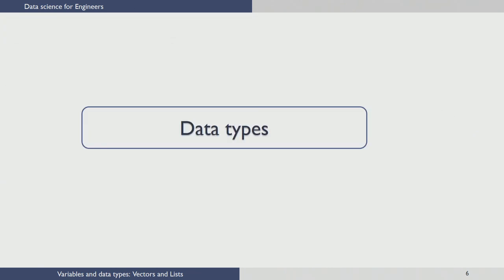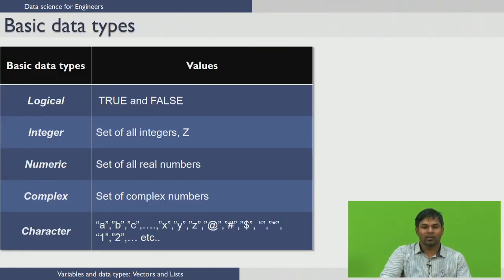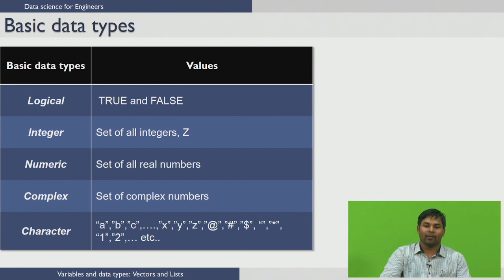Let us now look at the data types available in R. R has the following basic data types: logical, which takes a value of TRUE or FALSE; integer, which is the set of all integers; numeric, which is the set of all real numbers; complex, which supports all complex numbers; and character, which covers all alphabets and special characters.